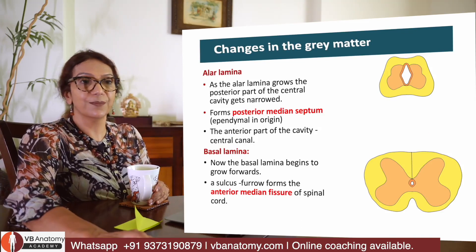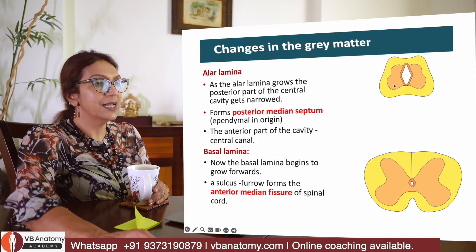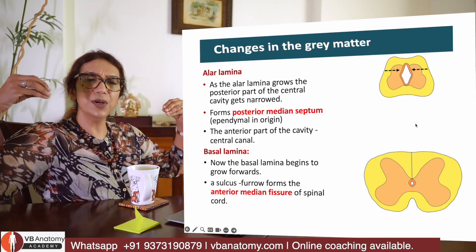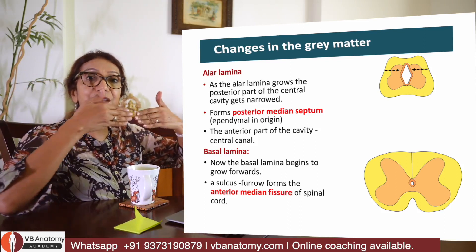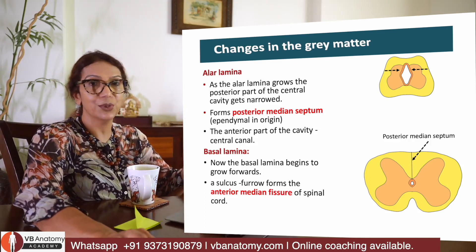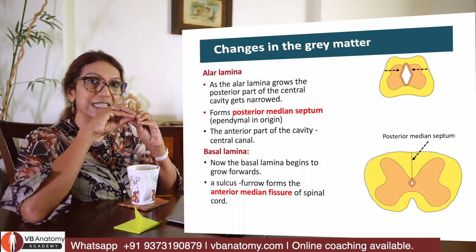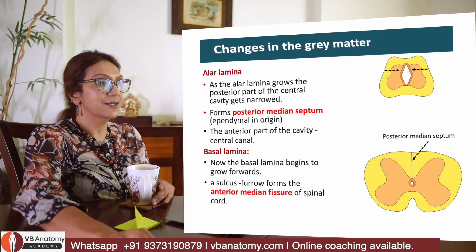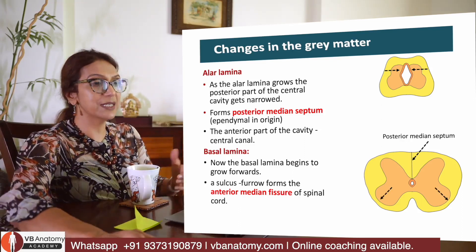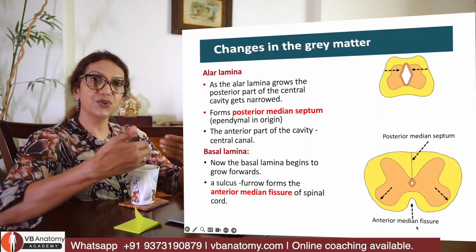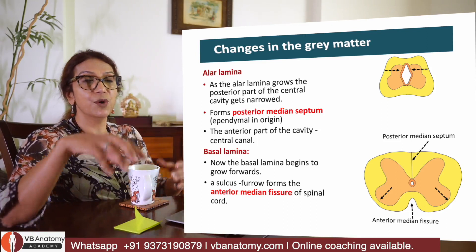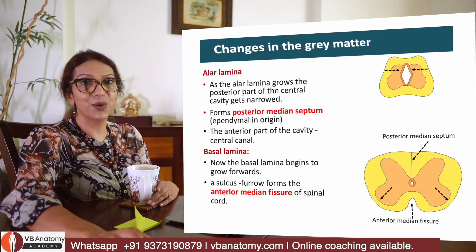Basal lamina develops into structures that are motor in function, while alar lamina develops into structures that are sensory in function. The two edges of the ependymal layer begin to get pushed medially and fuse, resulting in development of the posterior median septum, which is ependymal in origin. The central canal becomes much reduced in size and more anterior. Basal lamina grows forwards on both sides, with a deep fissure forming anteriorly called the anterior median fissure, and the two anterior grey horns are formed.